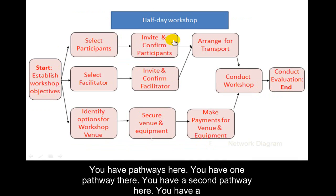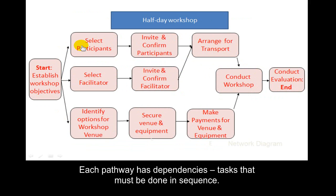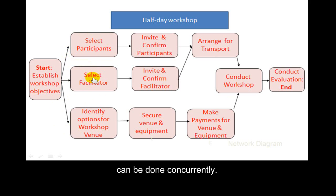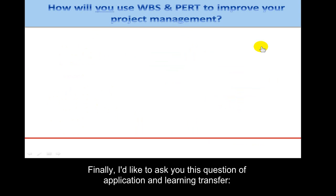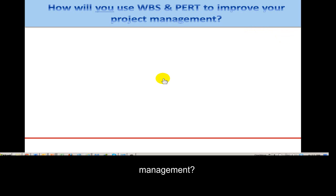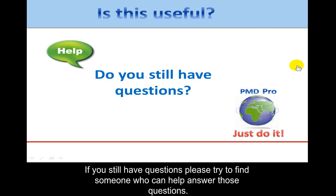You have pathways here — one pathway, a second pathway, and a third pathway. Each pathway has dependencies: tasks that must be done in sequence. Among the three pathways, the vertical lines represent parallel tasks that can be done concurrently. Finally, consider this question of application and learning transfer: how will you use the work breakdown structure and PERT network diagram to improve your project management? I trust this module on WBS and PERT charts has been useful. If you still have questions, please try to find someone who can help answer them.